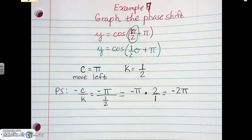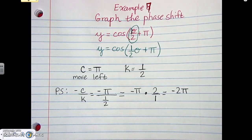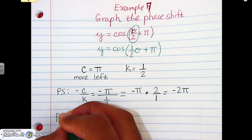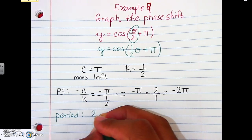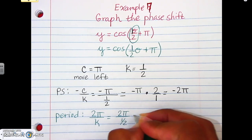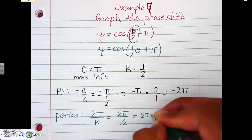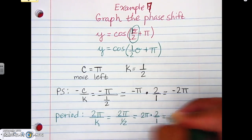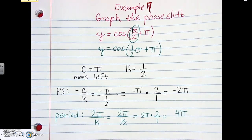Since we have a phase shift, our period also changes because we have a K value. Let's find the period quickly. The period formula is two pi over K, and K is one-half, so it's two pi over one-half. Using keep-change-flip again, that gives us four pi. So our period is four pi.